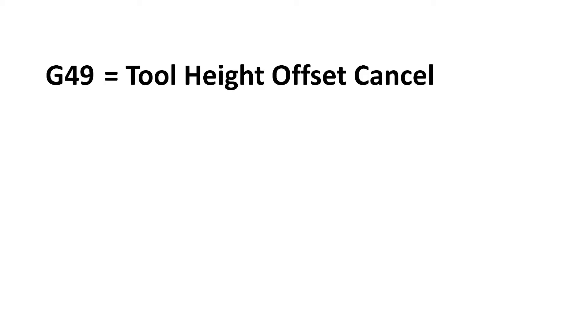G49 is used to cancel the G43 or G44. This is used when a tool has completed its function and is sent back to the machine Z home position, and another tool is going to be used.